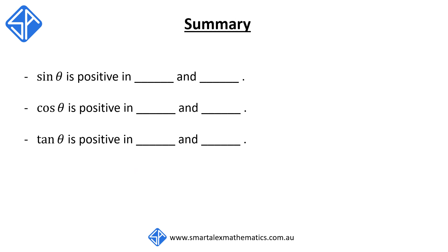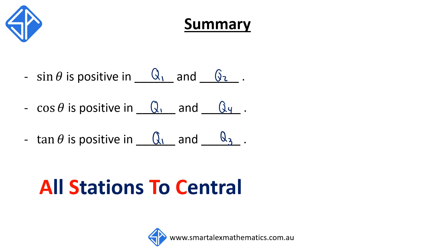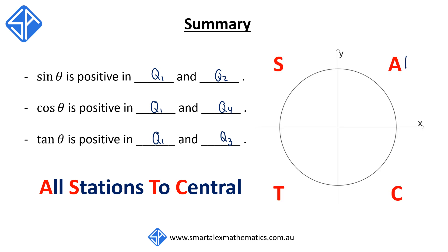In summary: sine theta is positive in quadrant 1 and quadrant 2; cos theta is positive in quadrant 1 and quadrant 4; and tan theta is positive in quadrant 1 and quadrant 3. To help us memorize this, we use the acronym 'All Stations To Central': A for All — all trig ratios are positive in quadrant 1; S for Sine — only sine is positive in quadrant 2; T for Tan — only tan is positive in quadrant 3; and C for Cos — only cosine is positive in quadrant 4.